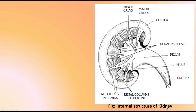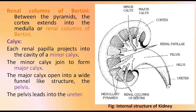This figure also shows the internal structure of the kidney. The renal columns of Bertini are the spaces in between the renal pyramids — the cortex extends into the medulla as renal columns of Bertini. In the kidney we have major calyces and minor calyces. Each renal papilla projects into the cavity of a minor calyx, which leads into the major calyx. The major calyx opens into a wide funnel-like structure called the pelvis, and this pelvis leads into the ureter.